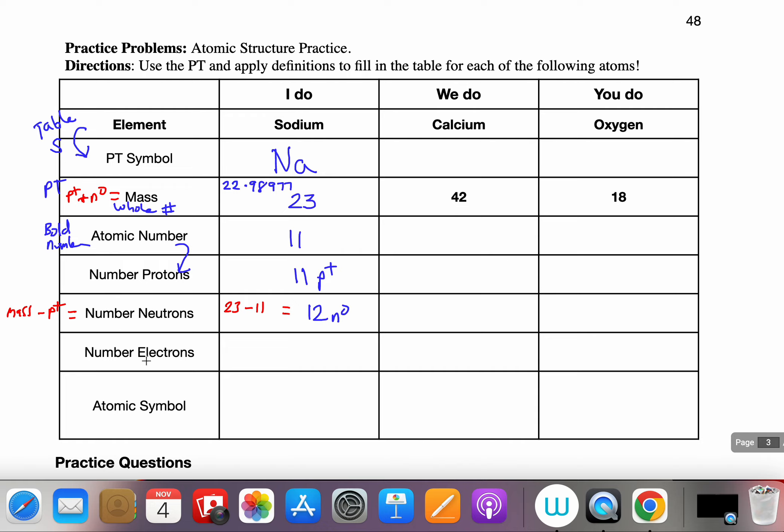Now it's asking me for the number of electrons. So when I look up here at the directions it says atoms. So all of these that we're working on in these practice problems are atoms. Atoms are neutral. So the two things that contribute charge to the atom are the protons contribute positive charge and electrons contribute the negative charge.